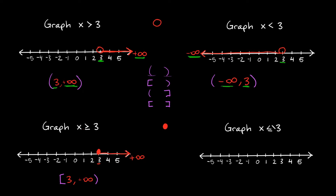This one says graph x is less than or equal to 3. We have the equal to symbol, so I know I'm going to use a closed circle at 3. And since x is smaller than 3, all those numbers are in this direction towards negative infinity. Writing the answer in interval notation: negative infinity is on the left, and 3 is on the right. I'll put a parenthesis around the negative infinity, and since 3 has a closed circle — or the equal to symbol — I'm going to use a bracket. So the answer is (-∞, 3].